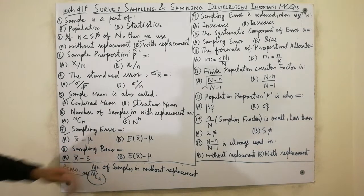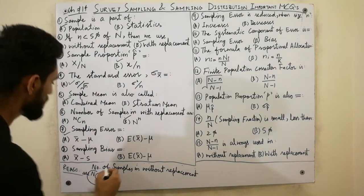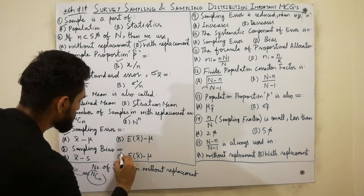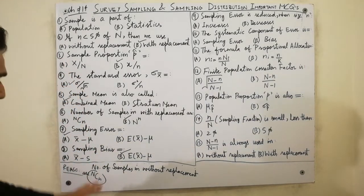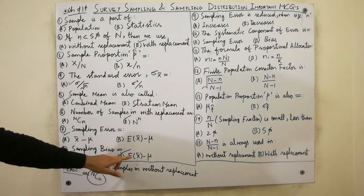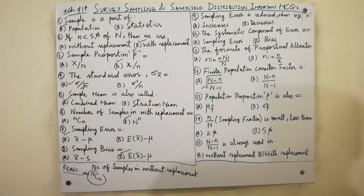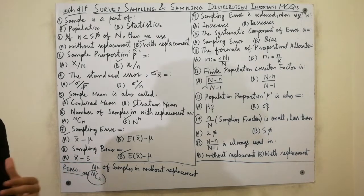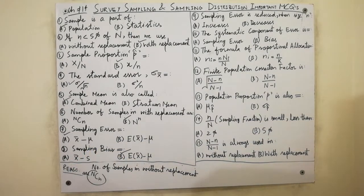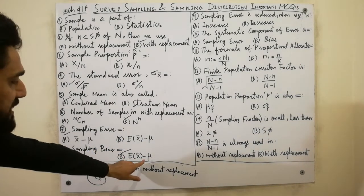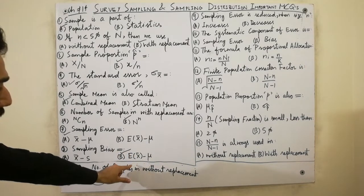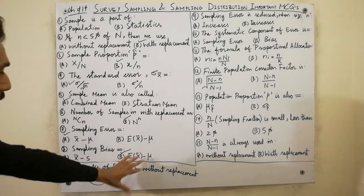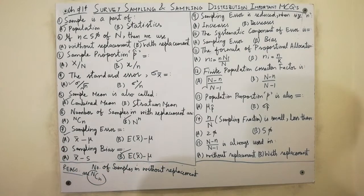Sampling bias is always equal to expectation of x-bar minus mu. The difference between the expected value of x-bar and the population parameter is called sampling bias. Must remember that sampling bias equals E(x-bar) minus mu.